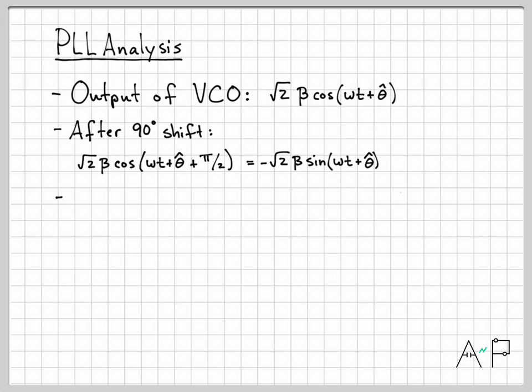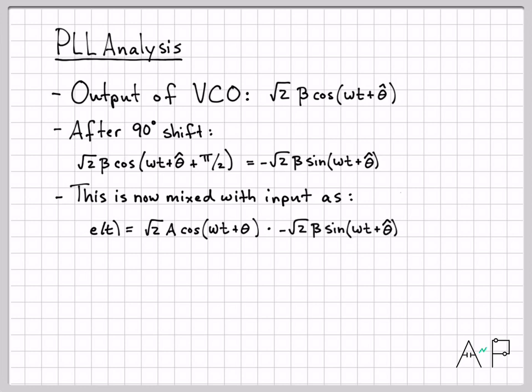The output of the phase shifter was mixed then with what was coming in. What was coming in was the coherent reference that we don't know the theta. So if we multiply this by the input, that was the output of that mixture is what we call the E of t. So E of t was equal to the product of the input, root 2a cosine omega t plus theta, times this quantity, negative root 2 beta sine omega t plus theta hat. So that is the form of E of t. And then let's just simplify that. Root 2 times root 2 is 2. I can bring the a and the beta out front. And then I have a cosine times a sine.